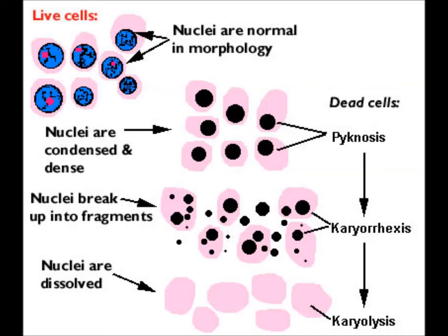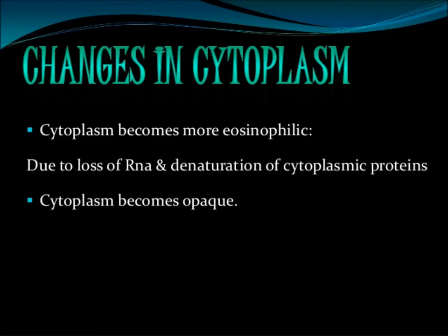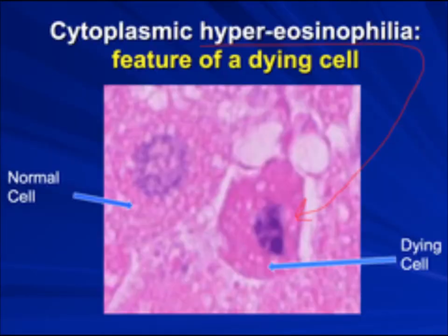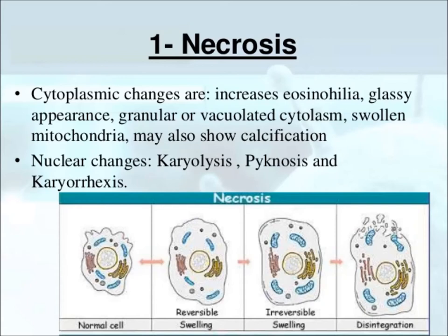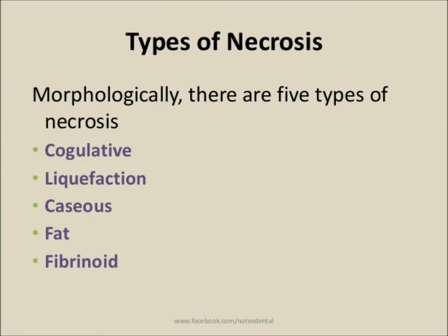In necrosis, the dead cell may show pyknosis (condensation of nuclei), karyorrhexis (fragmentation), or karyolysis (disappearance of nuclei). Nuclear changes are accompanied by cytoplasmic changes — the cytoplasm becomes more eosinophilic and opaque. Eosinophilia of the dying cell is due to increased uptake of eosin stain used in hematoxylin and eosin staining for light microscopy.